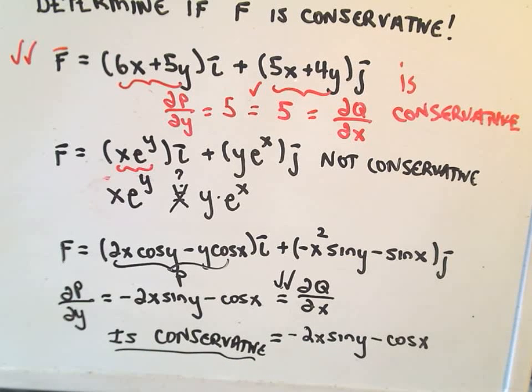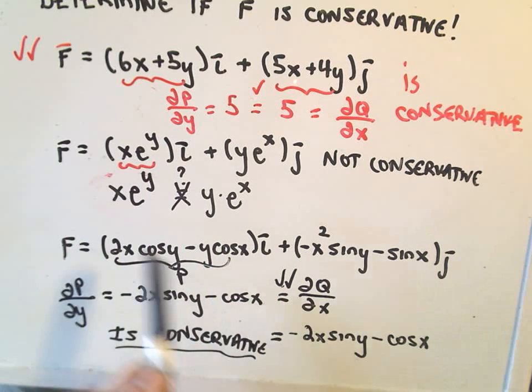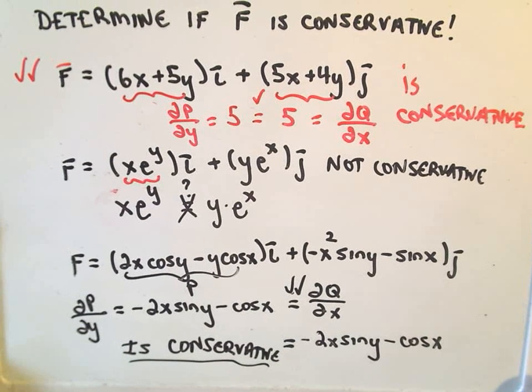One other thing to point out too, because in the definition it talks about P and Q having continuous first order partial derivatives. Notice that all these partial derivatives are very well-behaved functions. These are all continuous functions. So the partial derivatives are going to be continuous. But something maybe that you don't want to completely gloss over. In another video I'm going to show how to determine whether or not a vector field on R³ is conservative.